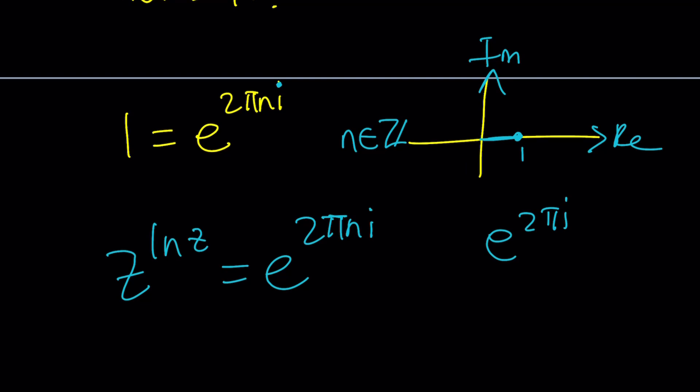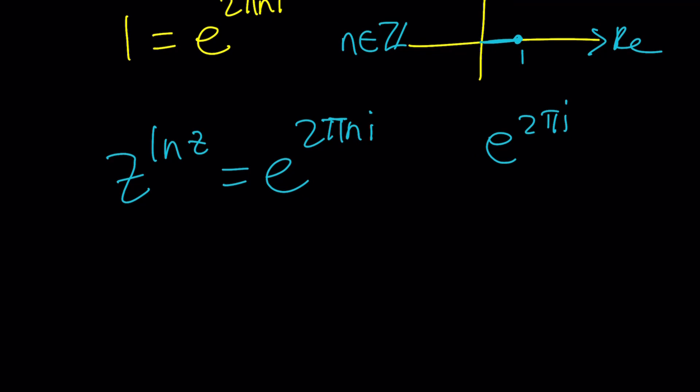So let's go ahead and take a look at how we can solve this problem. There are a couple different things you can do. Whenever you have something like t, you can write it as e to the power ln t. And I think this is also true for complex numbers. So I can write z to the power ln z as...